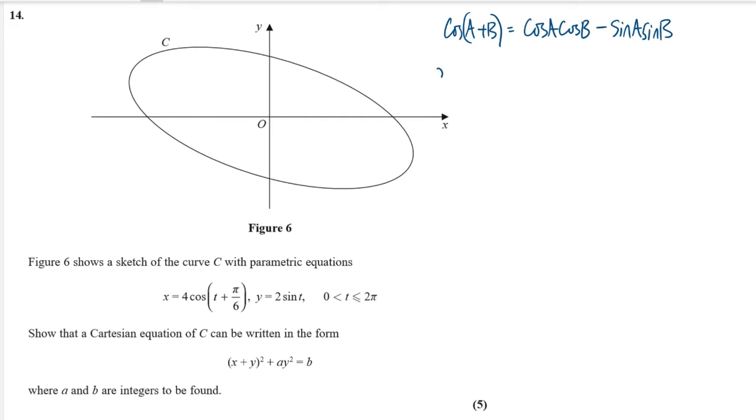So I have that x is equal to 4 lots of and then a is t and b is pi over 6. So I'd write cos t cos pi over 6 minus sine t sine pi over 6. Now these are exact values. Pi over 6 is 30 and we know what the value of cos 30 and sine 30 are. So I'd write x is equal to 4 lots of cos of 30 is root 3 over 2.